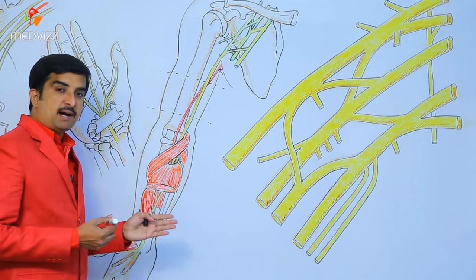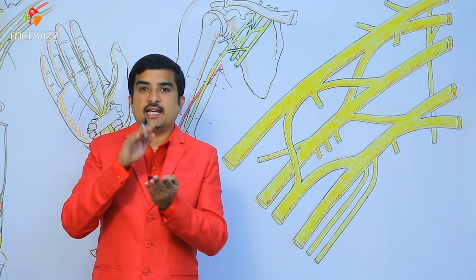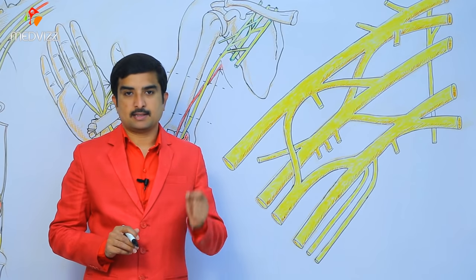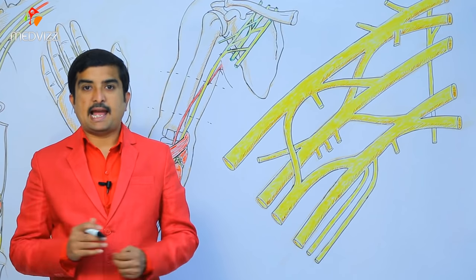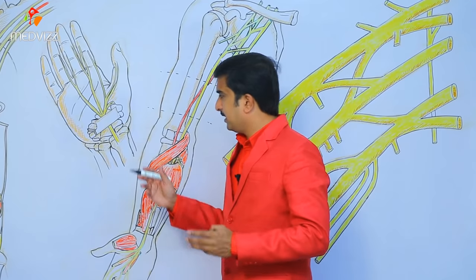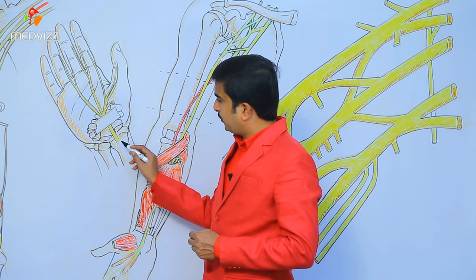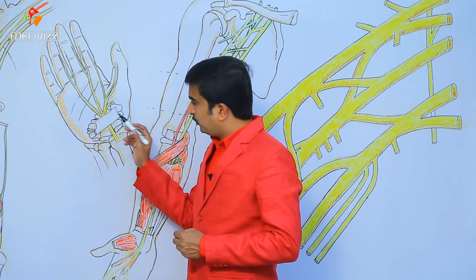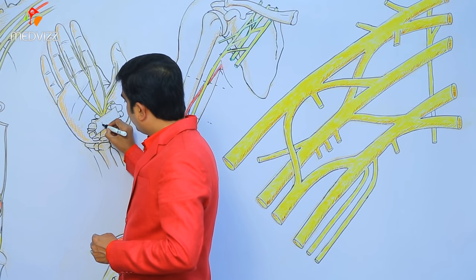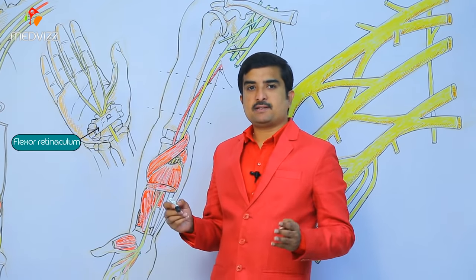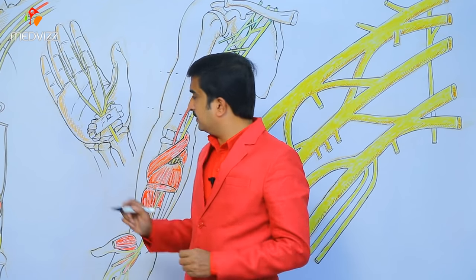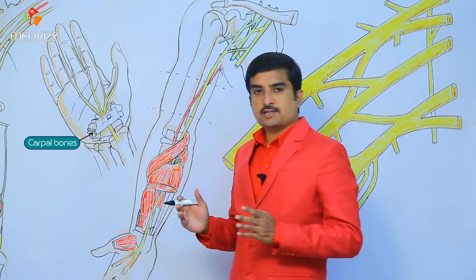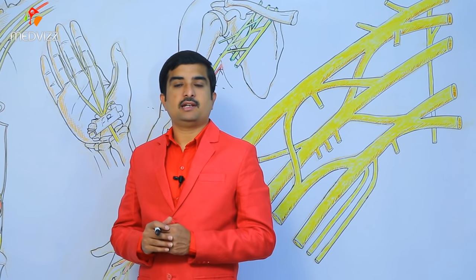While passing between these two muscles, the nerve is adherent to the flexor retinaculum. It is deep and lateral to the tendon of palmaris longus. It then enters the palm by passing through the deeper aspect of the flexor retinaculum, through the carpal tunnel.